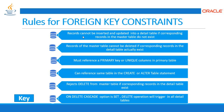Records cannot be inserted or updated into the detail table if corresponding records in the master table do not exist. A foreign key represents a relationship between two tables, or even within the same table — that's called a self-reference key. A foreign key is a column whose values are derived from the primary or unique key of another table. The table in which the foreign key is defined is called the foreign or detail table, and the table referenced is called the master table.